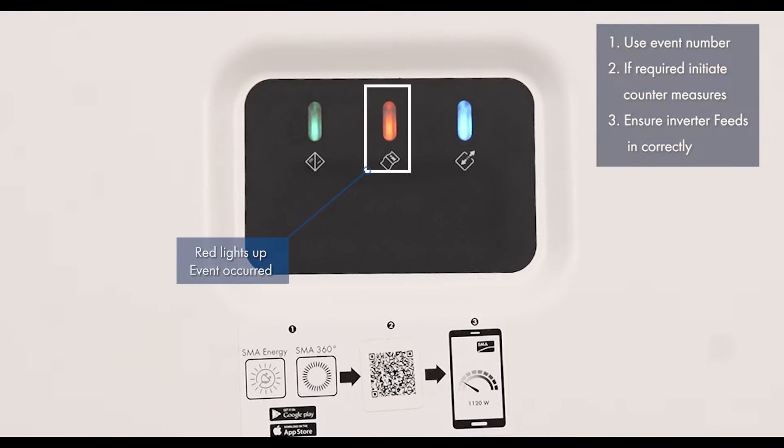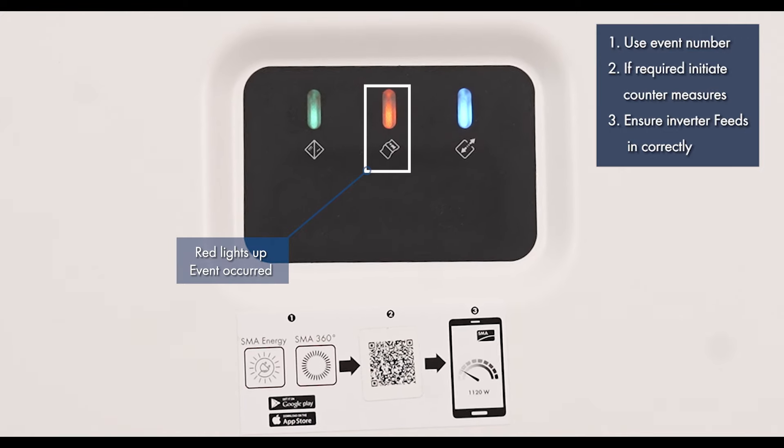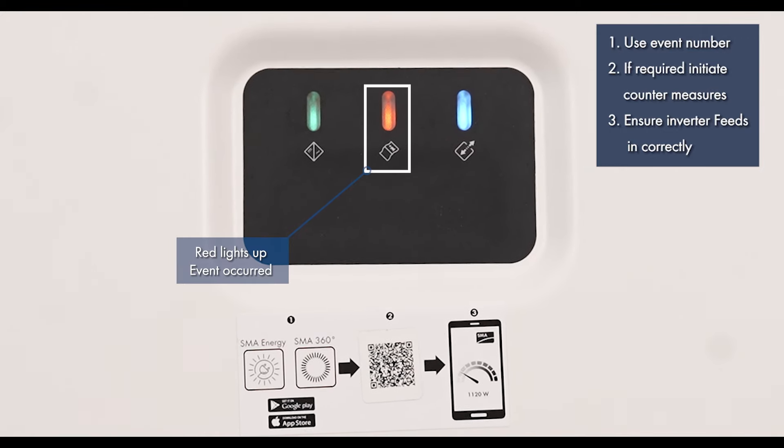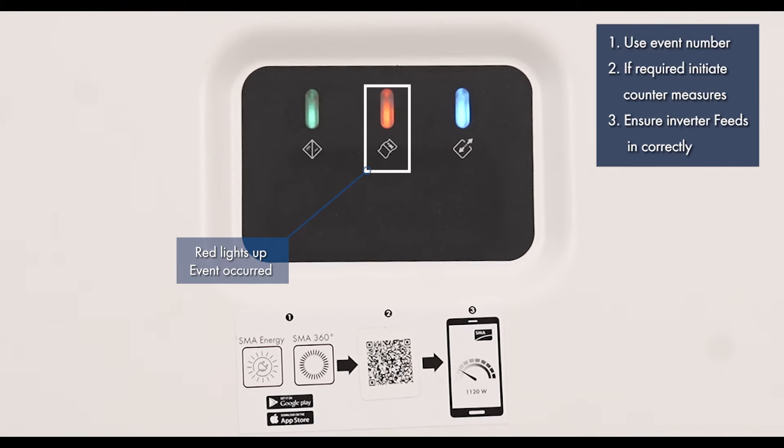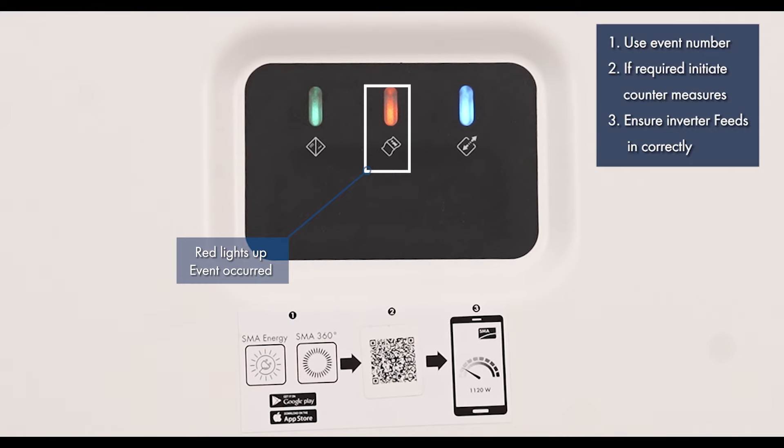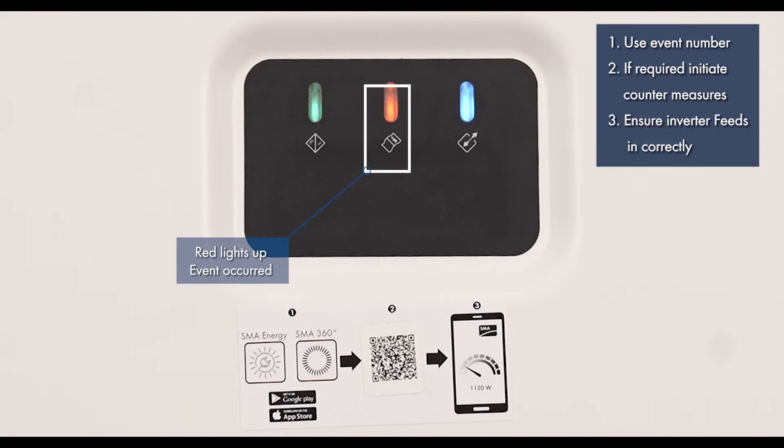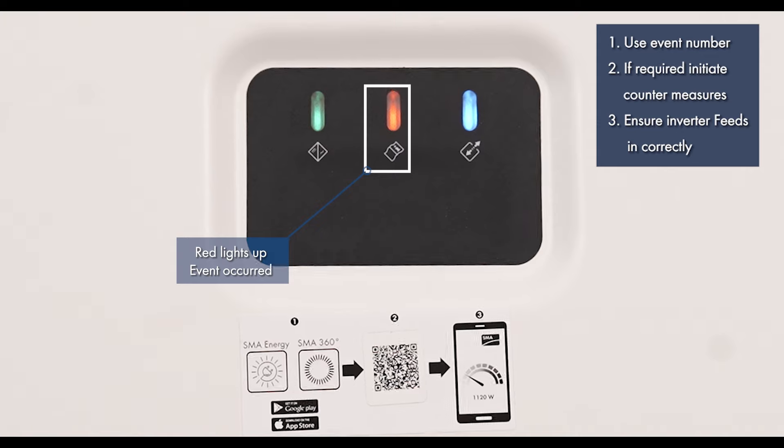If the red LED lights up, that means an event has occurred. In that case, use the event number to find out which event has occurred and, if necessary, initiate countermeasures. Ensure that the inverter feeds in correctly.